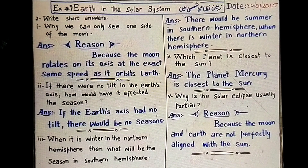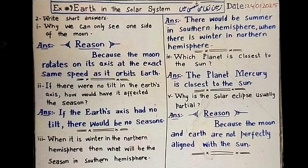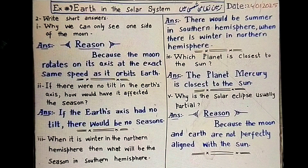The fourth question is: which planet is closest to the sun? The mnemonic is MVEMJSUN — Mercury, Venus, Earth, Mars, Jupiter, Saturn, Uranus, Neptune. The planet Mercury is closest to the sun.